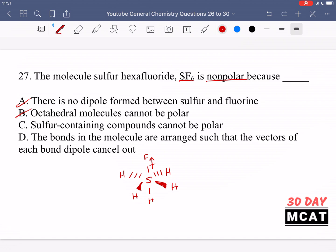Option B is saying octahedral molecules cannot be polar. That's incorrect because I just showed you an example of one which is polar, which is SH5F1. That is an example of an octahedral molecule that is polar. Option C is saying sulfur containing compounds cannot be polar, same issue. That's incorrect. And D is correct.